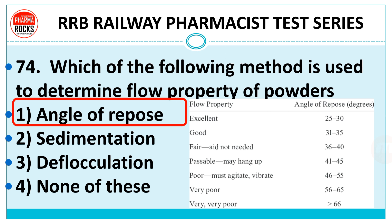When the angle of repose is 31 to 35, flow property is good. 36 to 40 indicates fair flow property, aid not needed. 41 to 45 indicates possible type. 46 to 55 is poor. 56 to 65 is very poor. And more than 66 is called very very poor flow property. This table is important for the flow property of powders.